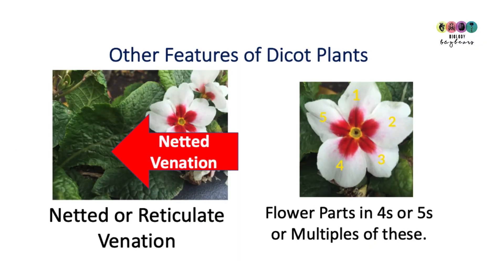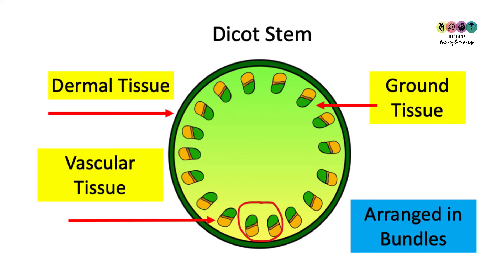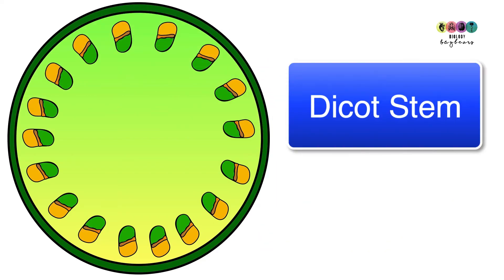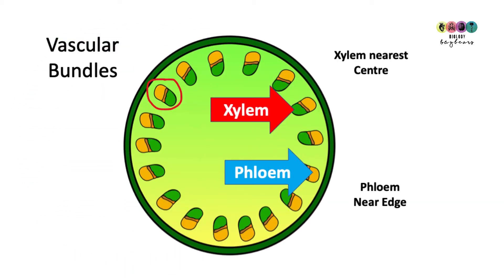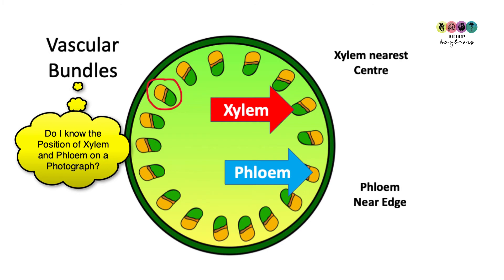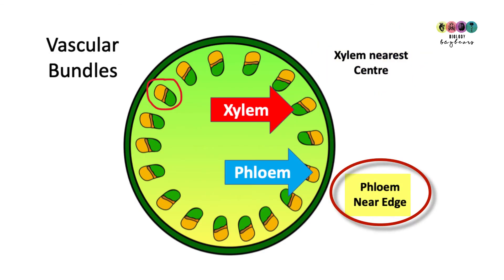Let's compare dicots to monocots. In dicots, the venation in the leaves is netted or reticulate, flower parts are in fours or fives or multiples of these, and most importantly, in a cross-section of the stem the vascular bundles are in a fixed arrangement around the edge. We have dermal tissue, ground tissue, and vascular tissue — three very important labels. Xylem is always the part of the vascular bundle nearest to the centre, and phloem is the part nearest to the edge.